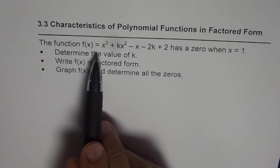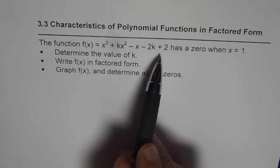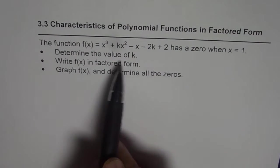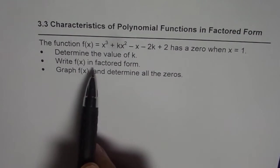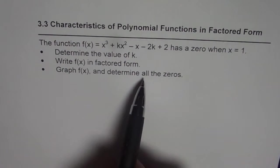The function f(x) equals x cubed plus kx squared minus x minus 2k plus 2 has a zero when x equals 1. Determine the value of k, write the function in factored form, graph f(x) and determine all the zeros.